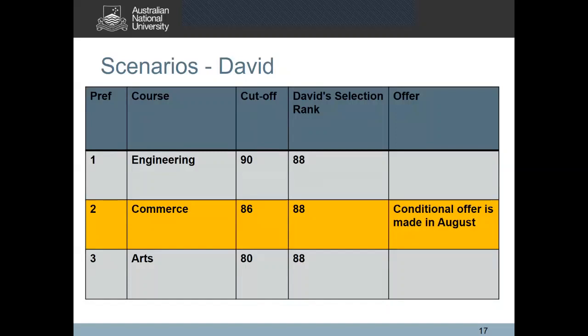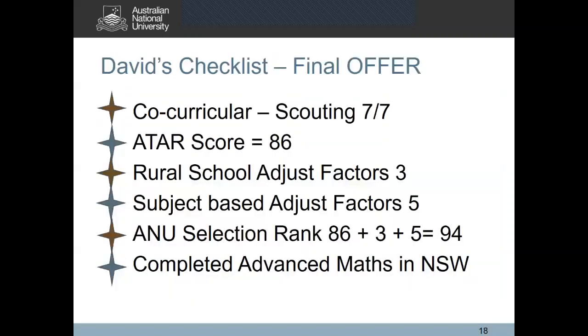With his ANU selection rank of 88, David not only meets the cutoff for a Bachelor of Commerce, but his selection rank is deemed competitive enough to receive an offer. Therefore we make a conditional offer in August to the Bachelor of Commerce. After receiving the conditional offer, David accepts his offer and continues with his year 12 studies.